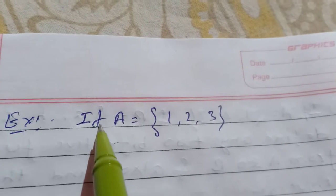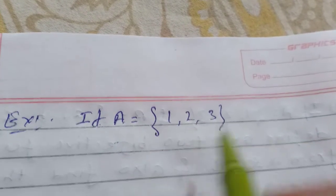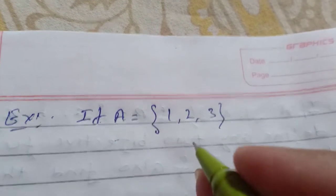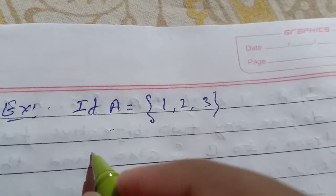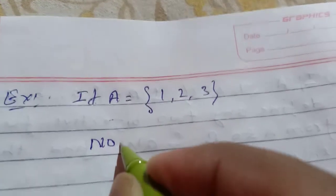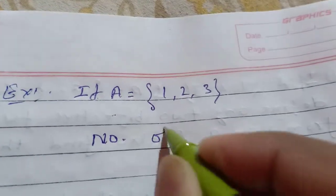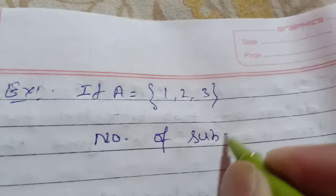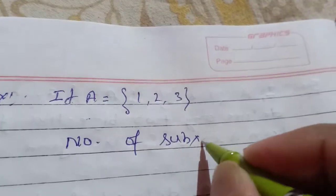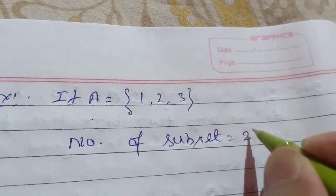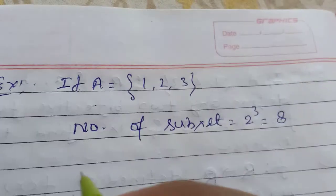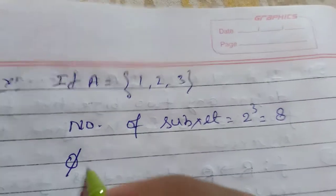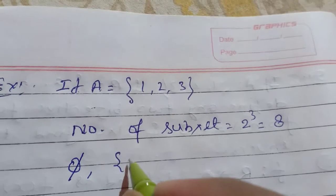Example: If A is equal to {1, 2, 3}, find the subsets and proper subsets. Since there are 3 elements, the number of subsets is equal to 2 to the power 3, that is 8.